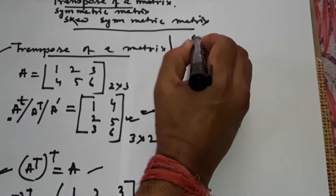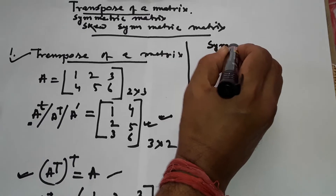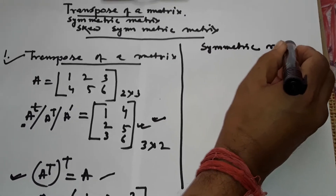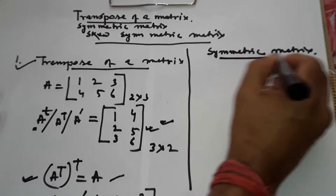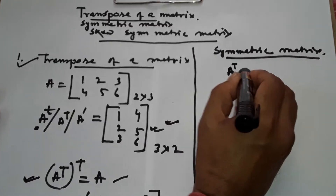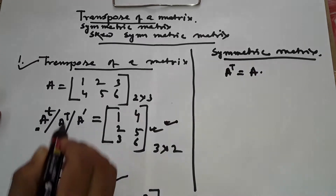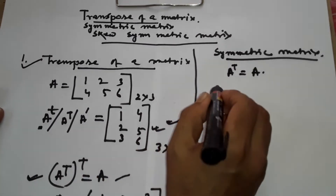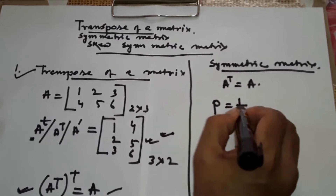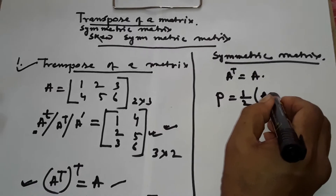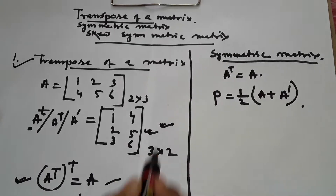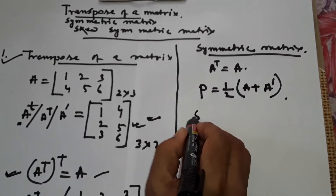Symmetric matrix: the formula is A to the power T equal to A. Or, P equal to 1 by 2 into A plus A transpose.